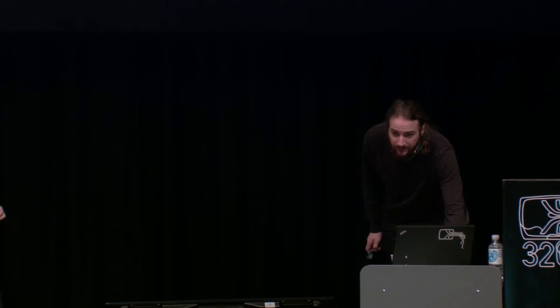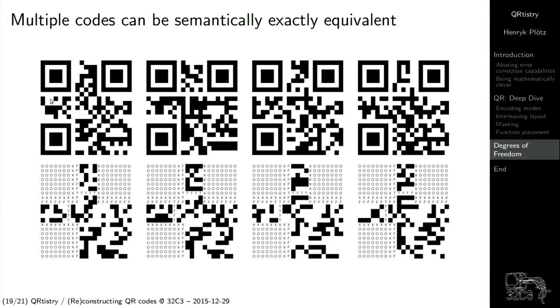We have one question at microphone two: I'm not exactly sure you talked about masking — how can we decode the masking? You said encoding works by choosing the best, but how does decoding work? The masking is encoded into the function modules. The first two bits encode the error correction level, and the next three bits encode which masking is used. Those bits are not masked. So you just read these bits — there is a mirror copy — see what masking was used, and unmask it. It's XOR, so you can just do it again.